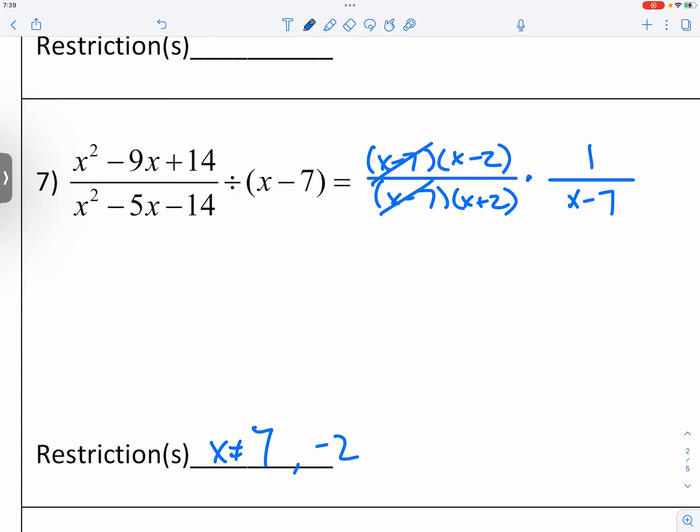And now we're going to start canceling things out. And that's the only thing we can cancel out. So at the end, we will have a fraction. And that is x minus 2 in the numerator. And x plus 2 times x minus 7 in the denominator. And we're just going to leave it like this.